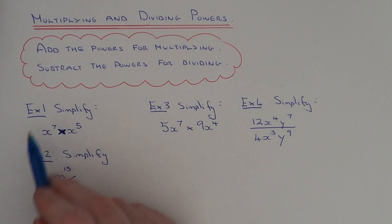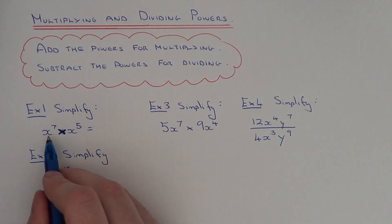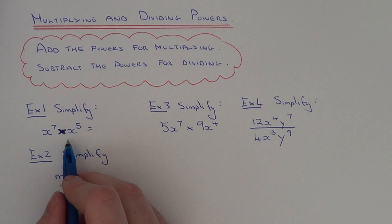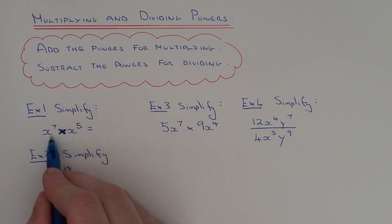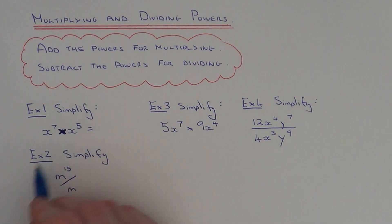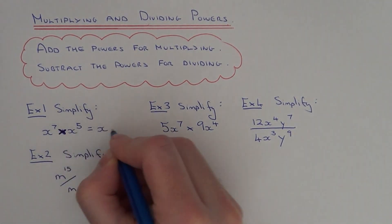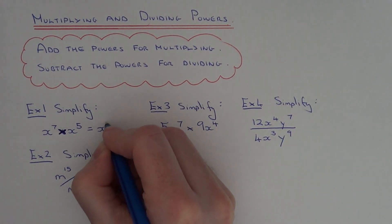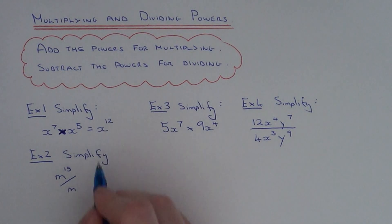So let's look at example one. We need to simplify x to the power of seven times x to the power of five. This time we are multiplying the two terms, so we need to add the powers. Seven add five gives us twelve, so that will be the final answer.